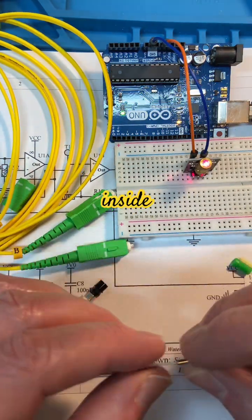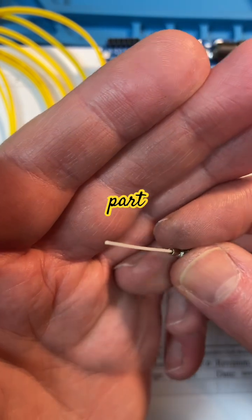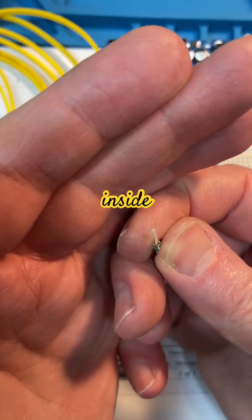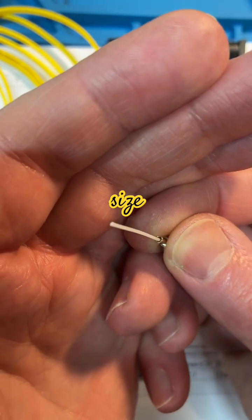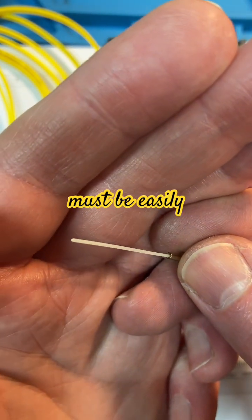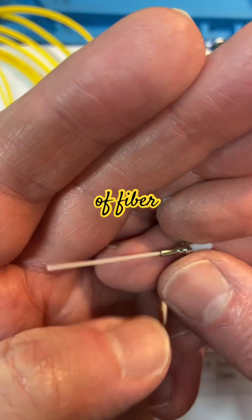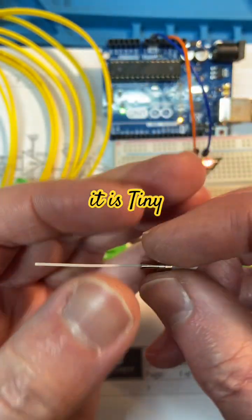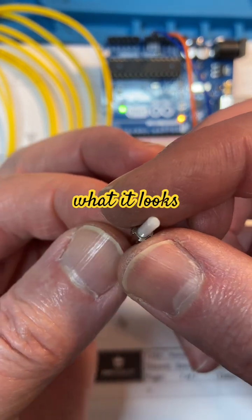This part inside here, the sheath, is the thick part. Your fiber inside is probably a tenth of that size. It must be easily a hundred microns or less. The fiber itself is tiny, and there's the lens part on the front. That's what it looks like.